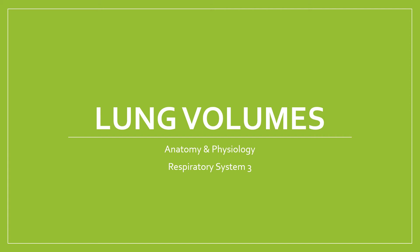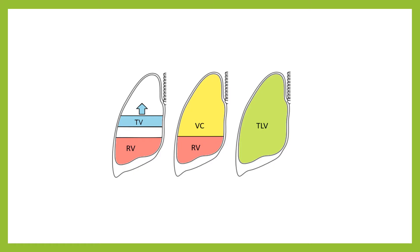Welcome to this video on lung volumes. We're going to look at the various different volumes within the lungs and how they relate to one another. On screen there's a simplified, color-coded diagram of the lungs showing the different components. We'll focus on four or five lung volumes. The first, shown in blue, is tidal volume (TV). Like a tide going in and out, tidal volume is the volume of air inhaled or exhaled in one ventilation cycle. While breathing normally, the average tidal volume for an adult is about 500 millilitres.